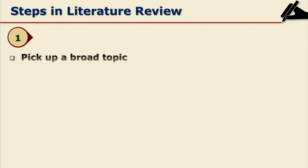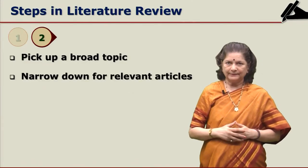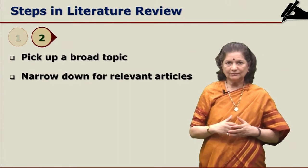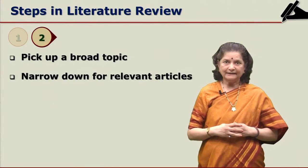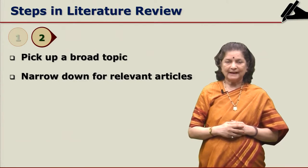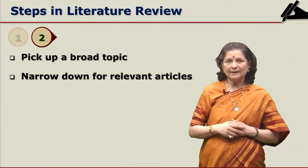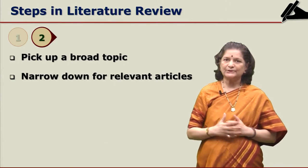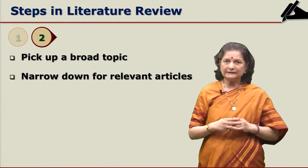The first step in literature review is to pick up a broad topic. For example, the broad topic decided by the researcher is mobile learning, which can be the broad area in education technology. After you pick up a broad topic, you will have to narrow down the approach and find out the relevant articles. For example, mobile learning is a broad topic in education technology.